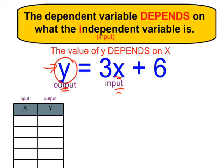For example, if I give x a value of 0, I'm going to replace x with 0. 3 times 0 is 0, plus 6 is 6. So if the value of x is 0, the value of y will be 6.